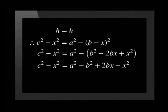If we add X squared to both sides, we get C squared is equal to A squared minus B squared plus 2BX. We want our answer in terms of A, B and C. Therefore, we should substitute for X.